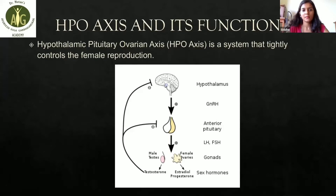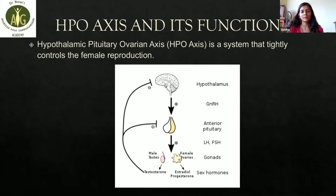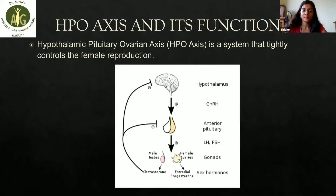So what do FSH and LH do? FSH starts increasing the growth of follicles in the ovaries, causing an egg to grow and mature, and also triggers the production of estrogen in the follicle. The rise in estrogen tells your pituitary gland to stop producing FSH and to start making more LH. This shift to LH causes the egg to be released from the ovary — a process called ovulation. The HPO axis is very complex and sensitive; abnormally high or low hormone levels can cause menstrual cycle issues.